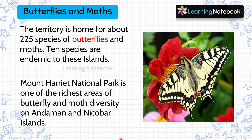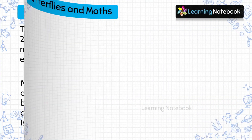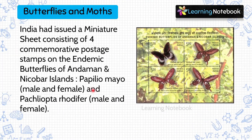After animals, you can also write about butterflies and moths — you can also write about insects. There are 225 species of butterflies and moths. If you go to Mount Harriet National Park, you will see a lot of beautiful butterflies and moths. On some of these butterflies, there were postage stamps issued in India.